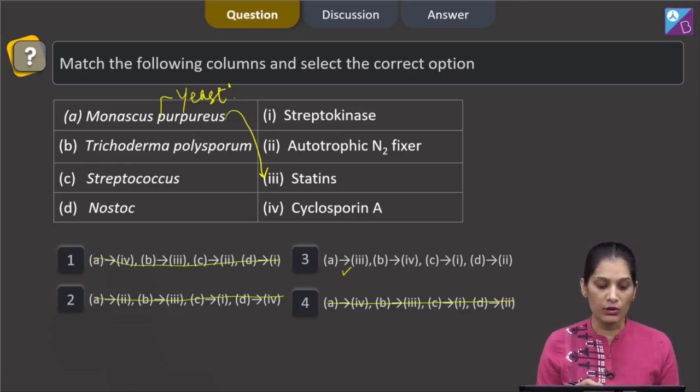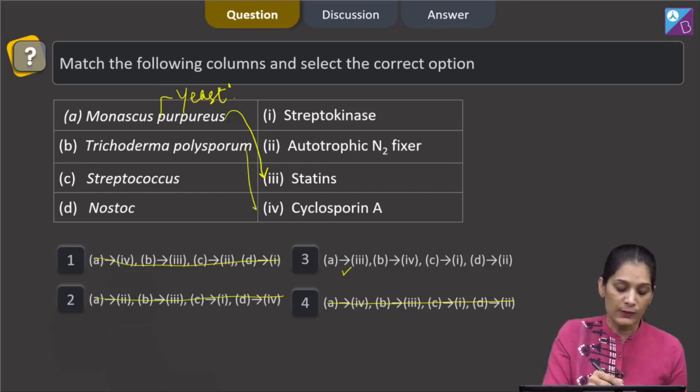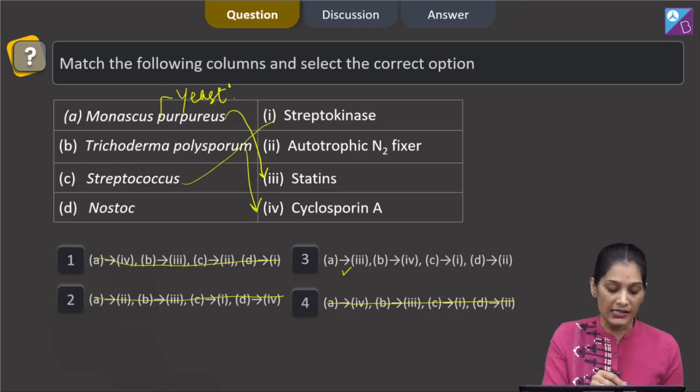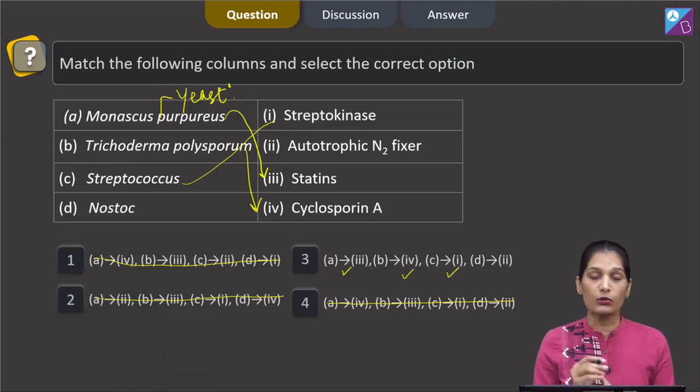B, Trichoderma polysporum. Trichoderma polysporum is a fungus which is used to produce the cyclosporine A. C, Streptococcus. Streptococcus is used to obtain the streptokinase. So C matches with first.